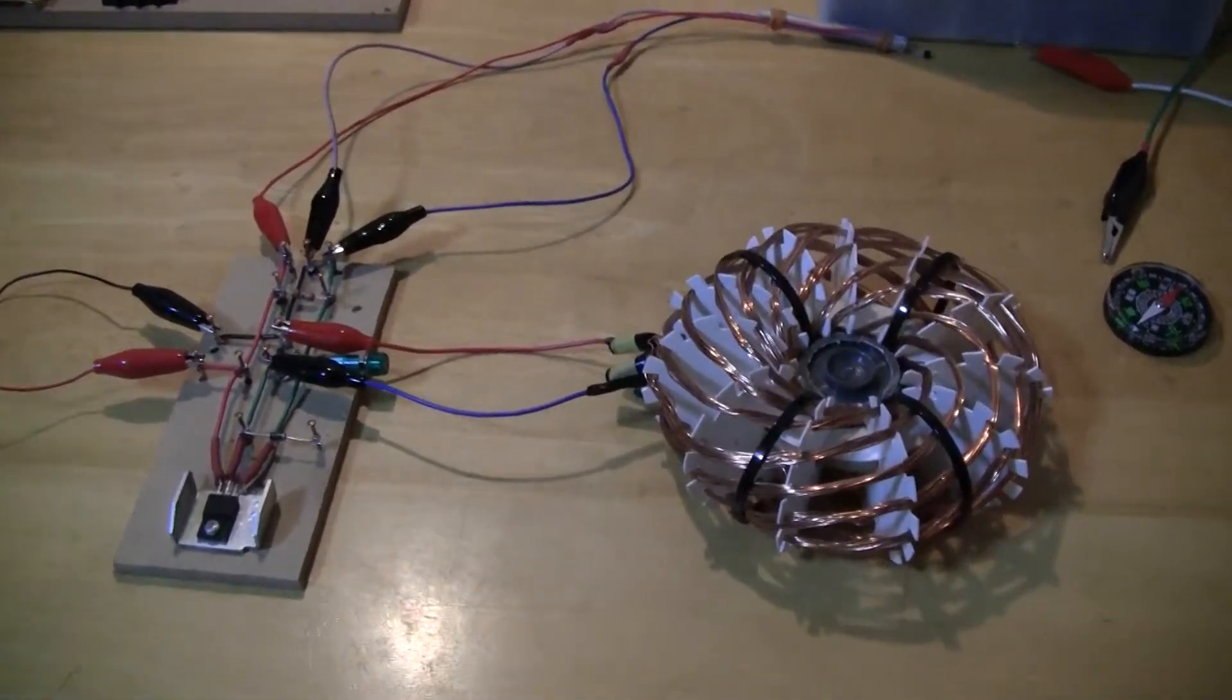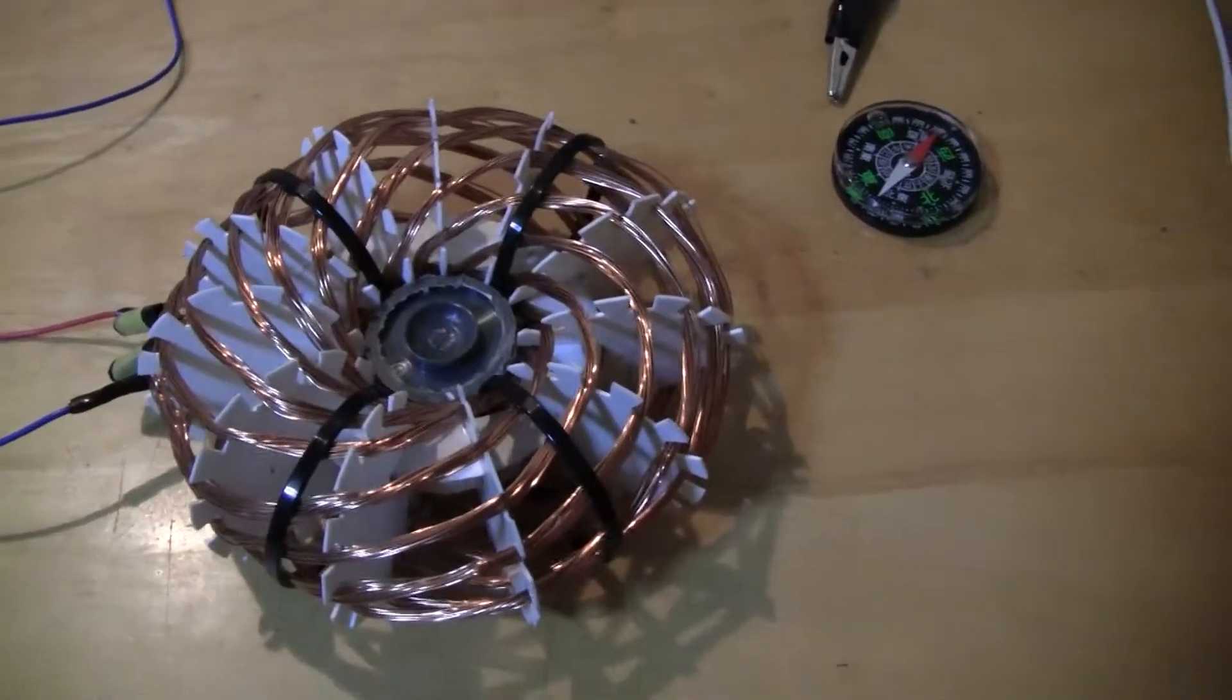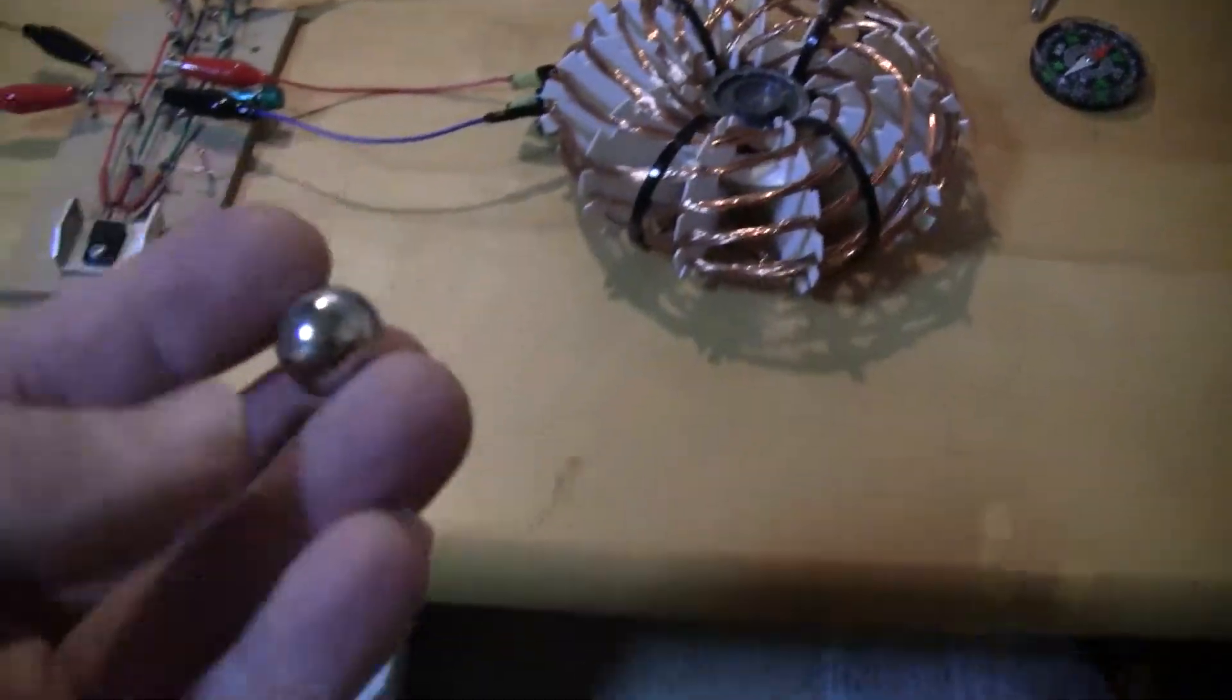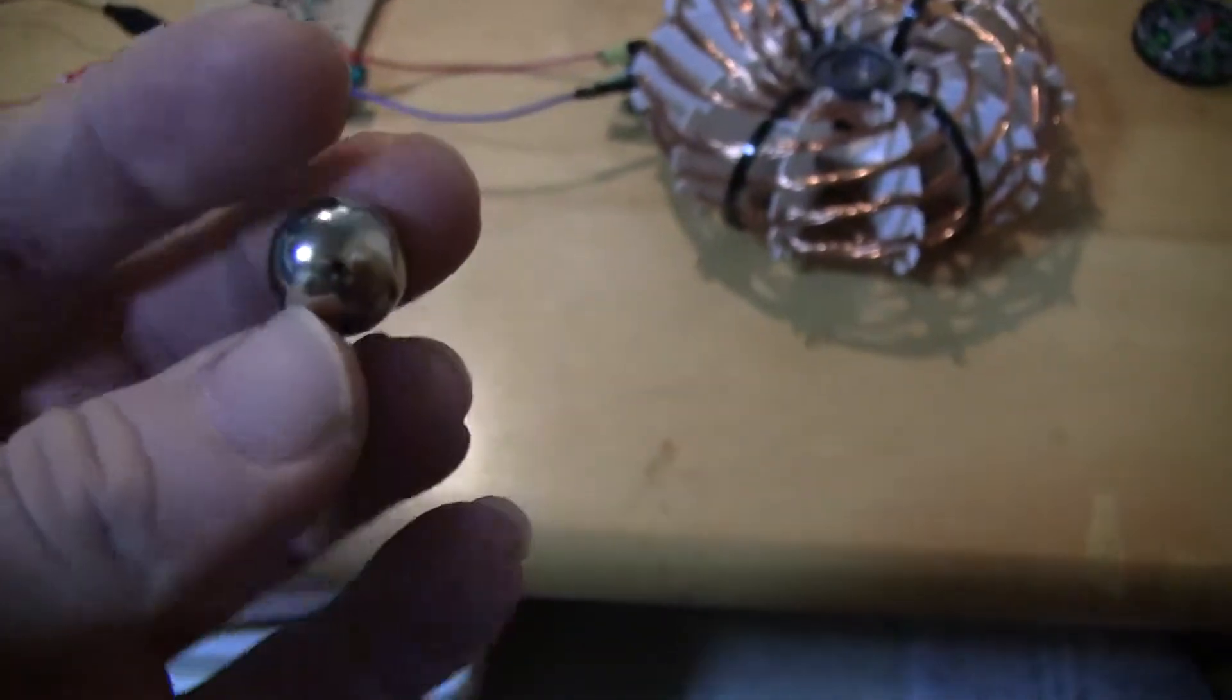Hello again. Here it is all clipped together. There's the circuit. Here's the coil. And this is a neodymium magnet, 1.5mm north and south.